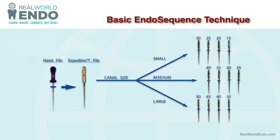You triage the case using the expediter, and it also works nicely as an orifice shaper. If the file is tight, you're dealing with a small canal; if it's wobbling around, it's a large canal. Then you open the appropriate procedure package and start your crown-down preparation from the largest size down to the smallest. There are four procedural packs — small, medium, large, and extra large — each with four files, used in a crown-down fashion.